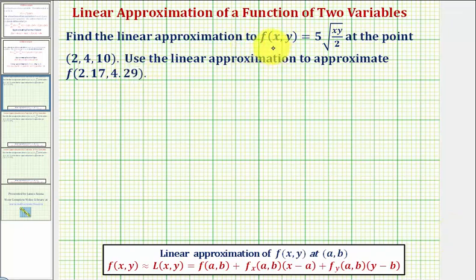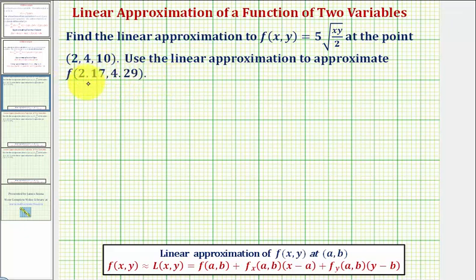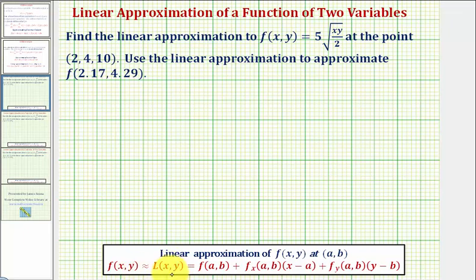We want to find the linear approximation to f of x comma y at the point two comma four comma ten, then use a linear approximation to approximate a new function value. Notice how this function value is near the given point. The linear approximation to a function of two variables is l of x comma y, where it's going to be approximately equal to f of x comma y as long as x comma y is near the point a comma b where we find the linear approximation.